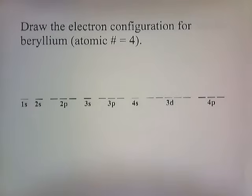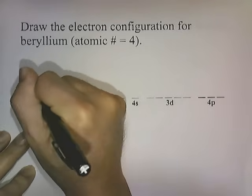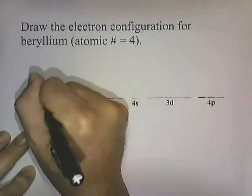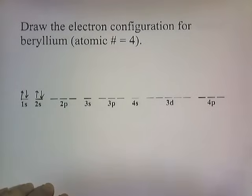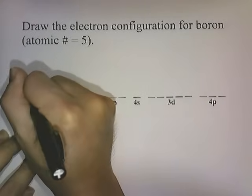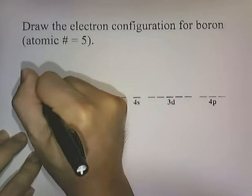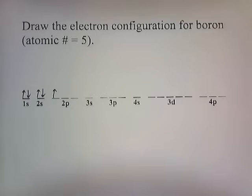Beryllium has four electrons — two in 1S and two in 2S, spinning in opposite directions. Boron has five electrons — two in 1S, two in 2S, and one in the first orbital of 2P. We just go from left to right, putting two arrows in each orbital with arrows spinning in opposite directions.